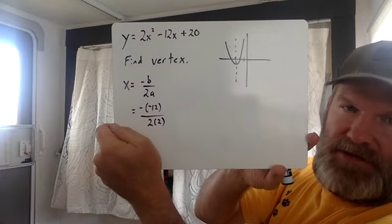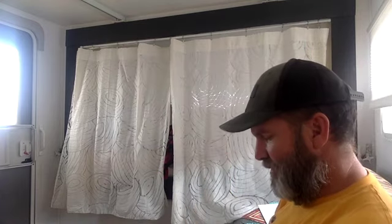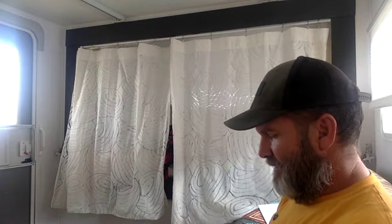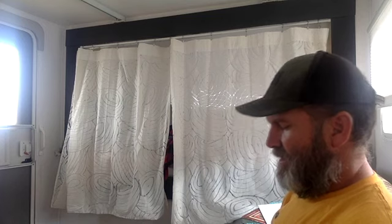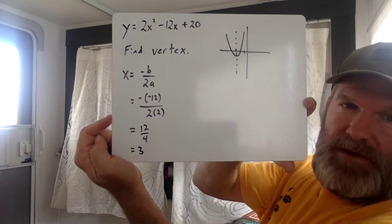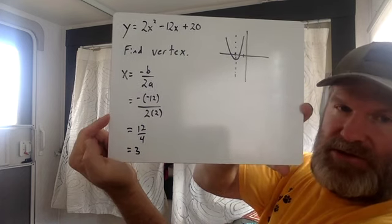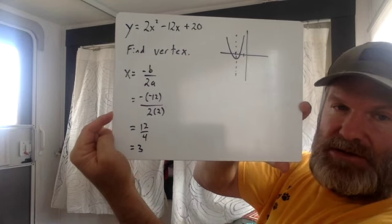The negative of negative 12 is positive 12. 2 times 2 is 4, and 12 divided by 4 is 3. Positive 12 divided by 4 is 3. So your x coordinate, or your axis of symmetry in this case, is 3.